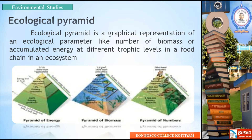One of the levels represents a graphical representation. When we look at a food chain, we can see a method of Ecological Pyramid. It represents different trophic levels — where there is a number, where there is a biomass, where there is energy.